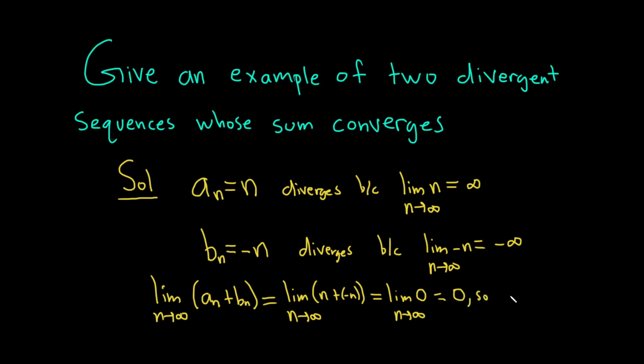This means that our new sequence, a_n + b_n, converges. So we found two divergent sequences such that the sum, a_n + b_n, converges. I hope this video has been helpful. Good luck.